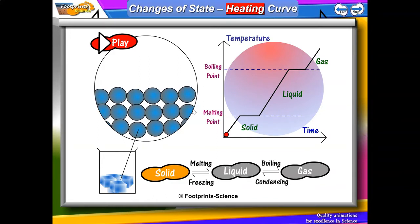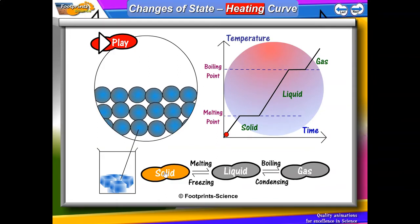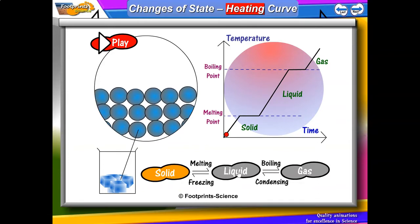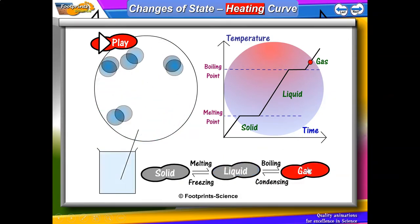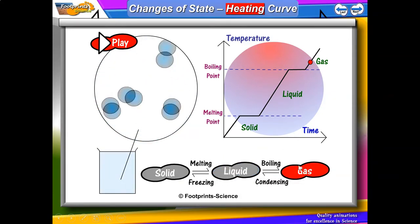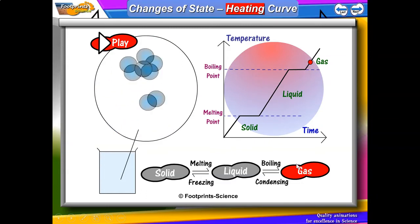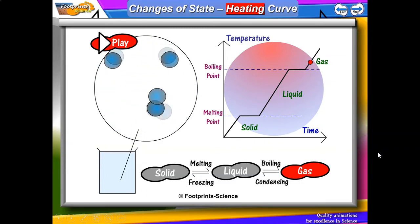Let's take a look at the different arrangements. Using the solid state as an example, you can see that the particles are vibrating in fixed positions. For the liquid state, the particles are sliding freely and randomly around one another. And for gases, the particles are moving freely and randomly in all directions at high speeds.